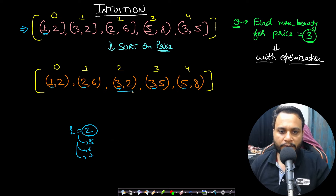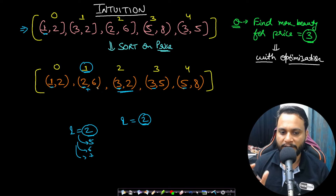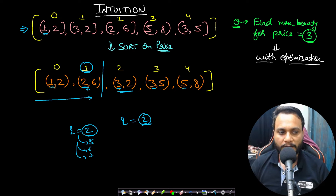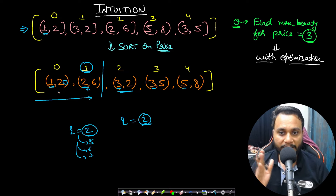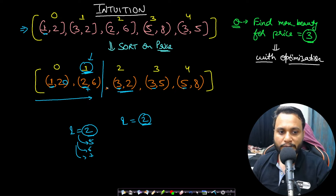You might think we can find where to stop optimally using binary search. For a query price of 2, binary search finds that index 1 is the highest index with price less than or equal to the target. But even knowing where to stop, you still don't know which item has the highest beauty — you'd have to iterate all items from that point back to the beginning. A higher price doesn't mean higher beauty; price 1 could have beauty 20. So a simple straightforward binary search alone will not help.